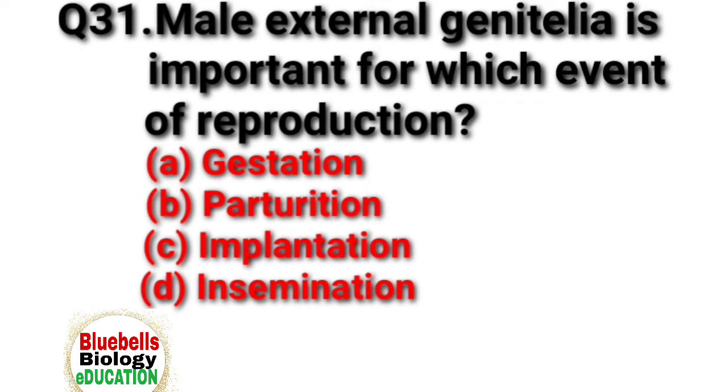Question 31. Male external genitalia is important for which event of reproduction?